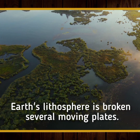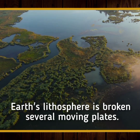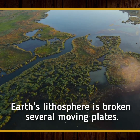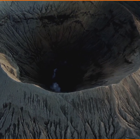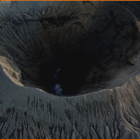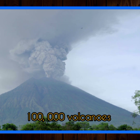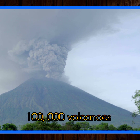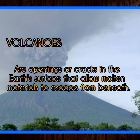Earth's lithosphere is broken into several tectonic plates, or segments of Earth's crust that are extremely slow in motion. Most volcanoes can be found in areas where tectonic plates are located. Some geologists estimate the number of active and extinct volcanoes to be 100,000 in all. Volcanoes are openings or cracks in the Earth's surface that allow molten magma or other material to escape from the mantle beneath.